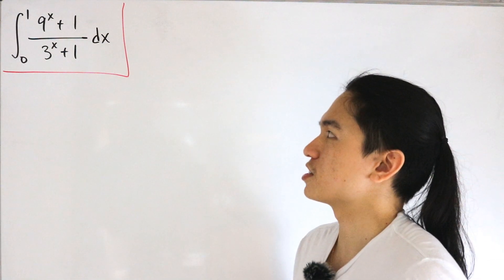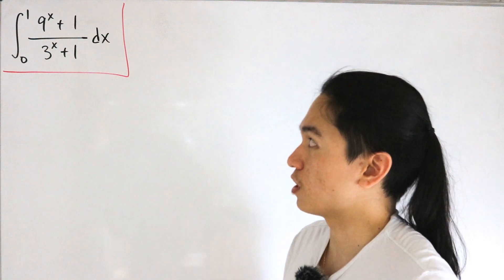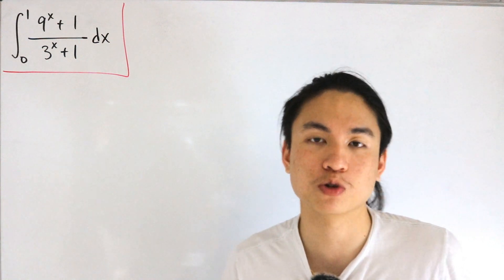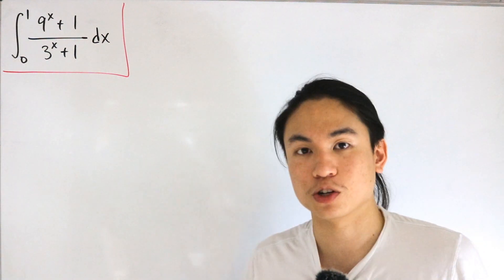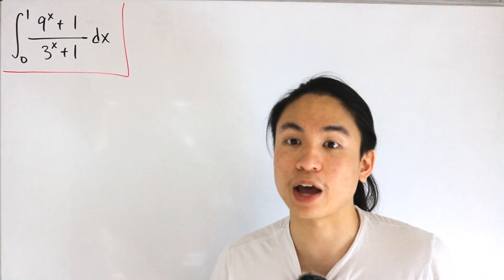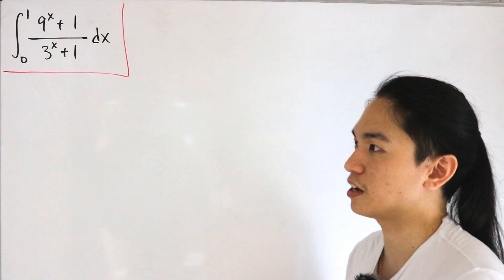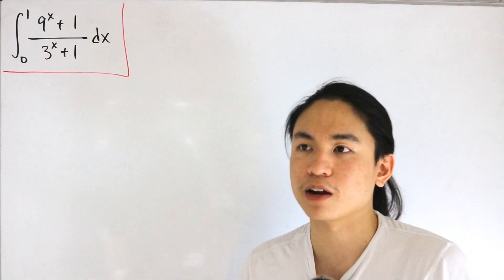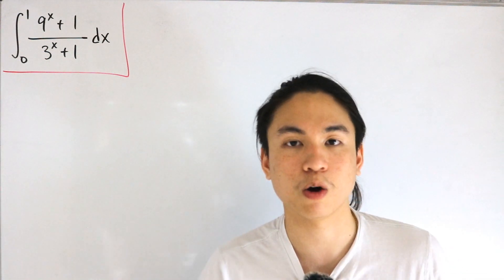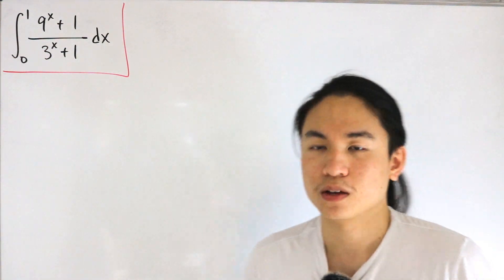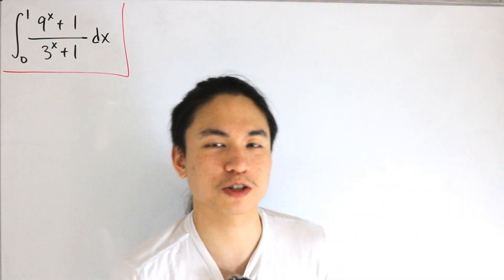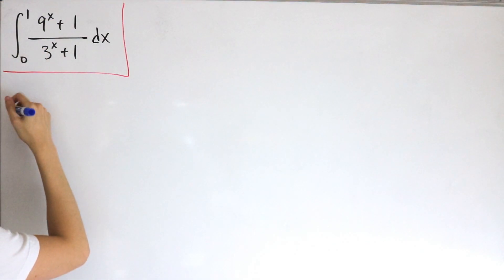What we will do is simplify some things. Notice that nine to the power x can be written as the same thing as three to the power two times x — that's a good starting point. From there we get a little creative, utilizing some elementary calculus techniques, then applying linearity to make a whole bunch of those integrals a lot easier to work with. The trick we're going to use will reveal itself as we go, so let's jump right in.